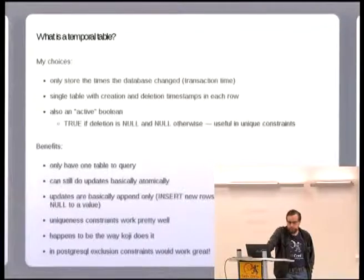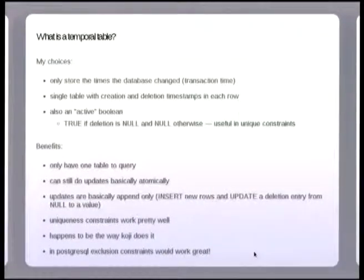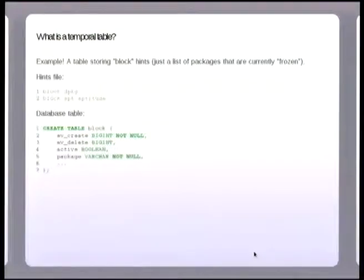So the way I chose is basically the same way Koji does it - I couldn't find a better way. You store the times when what's in the database changed, you store when it's become invalid, and I've also got an extra column that's just a boolean to say okay this is an active row, because that makes indexing a little bit easier. I like that because there's only one table to query, and when you're doing updates it can be fairly atomic. So that's what a table looks like.